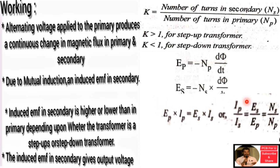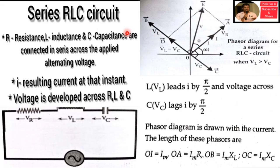For an ideal transformer with no power loss, input power equals output power: E_P times I_P equals E_S times I_S. Therefore I_S by I_P equals E_P by E_S, which equals N_P by N_S. The EMF ratio E_S by E_P equals N_S by N_P. Next topic is the series LCR circuit, which is an important 5-mark question.